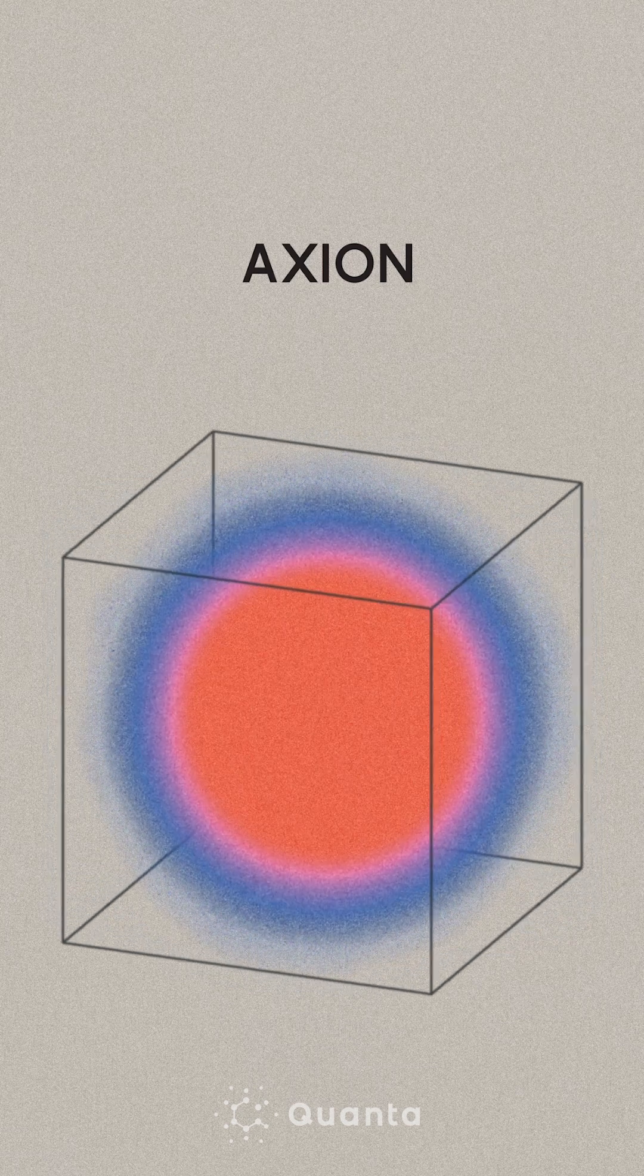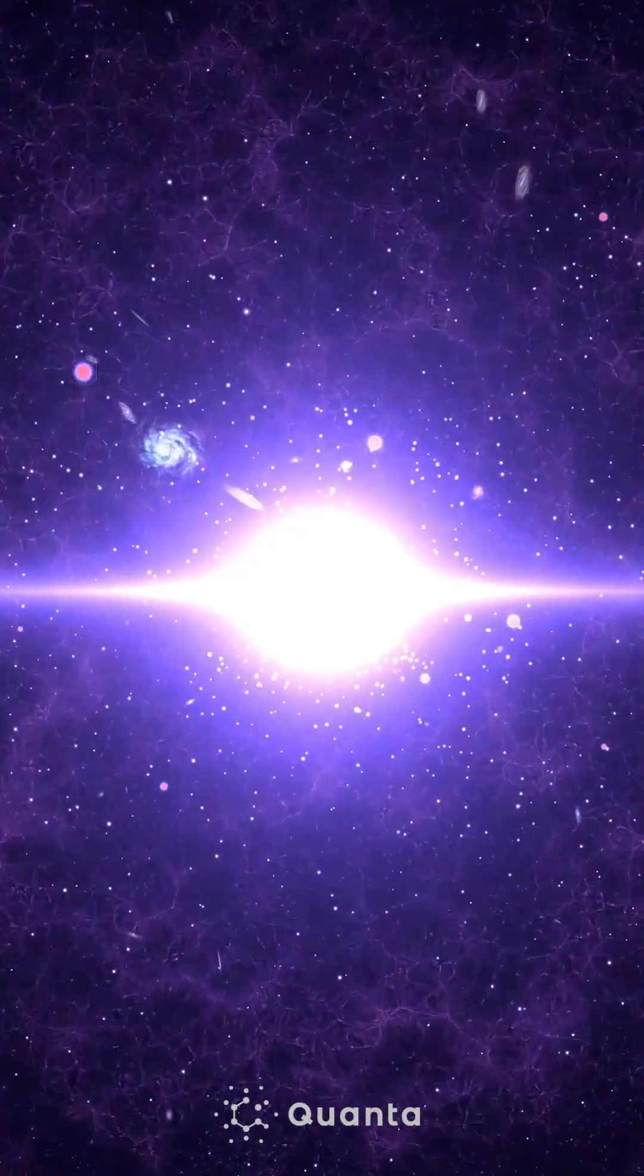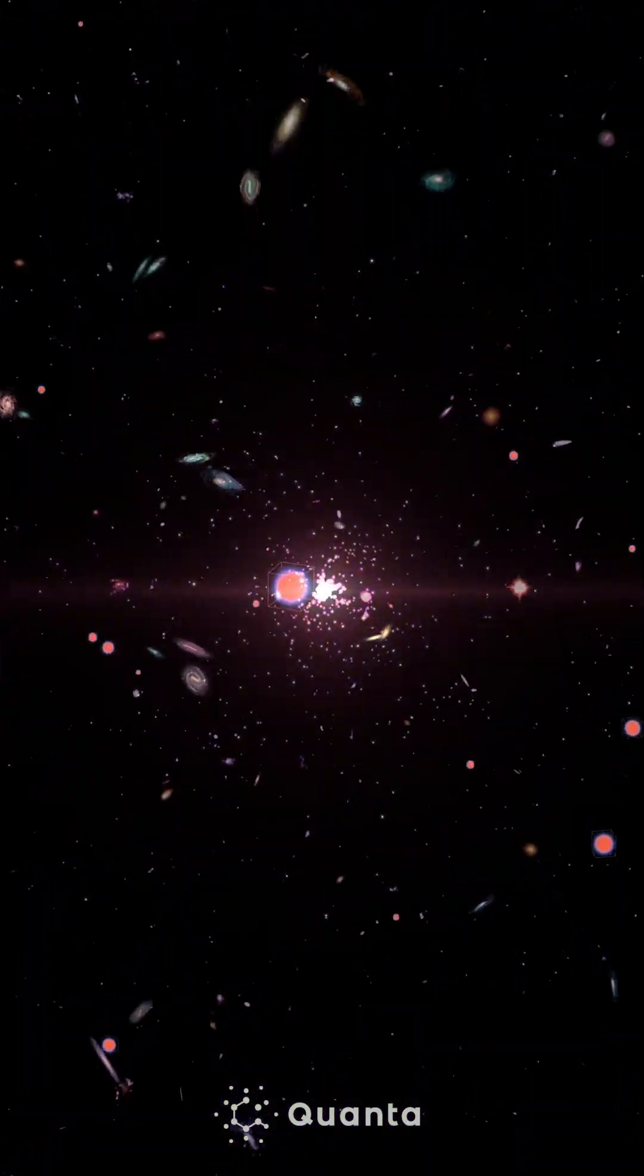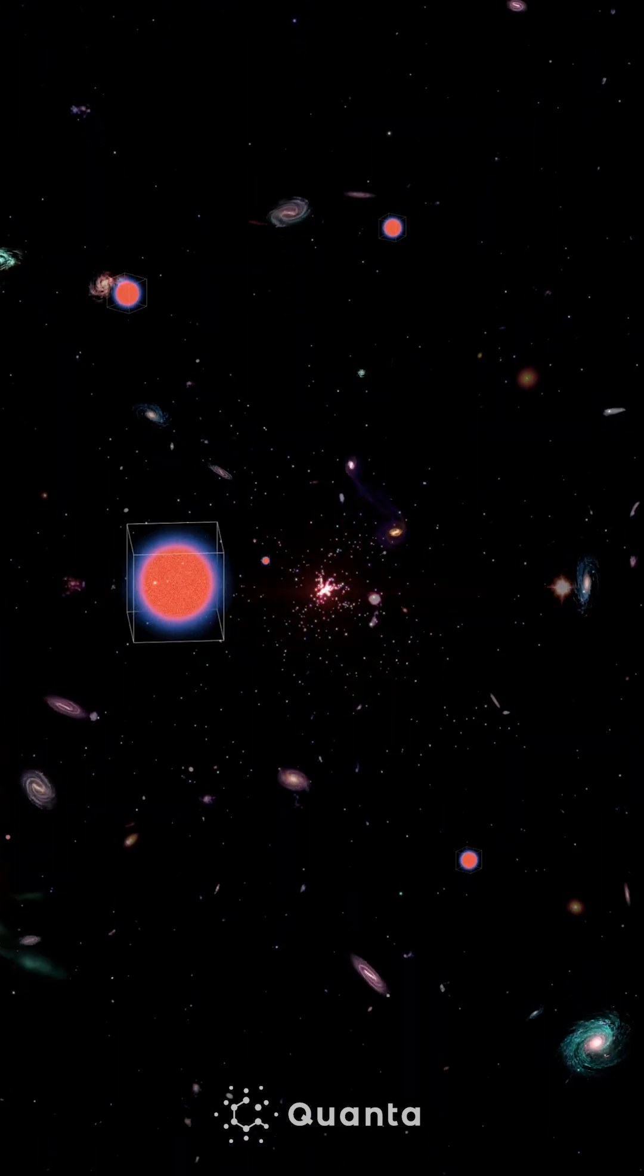Then it was quickly realized that it's a good dark matter candidate. There are natural mechanisms for how these axions can be produced during the Big Bang. These mechanisms can then give rise to axion fields that match the properties of dark matter as we observe it now.